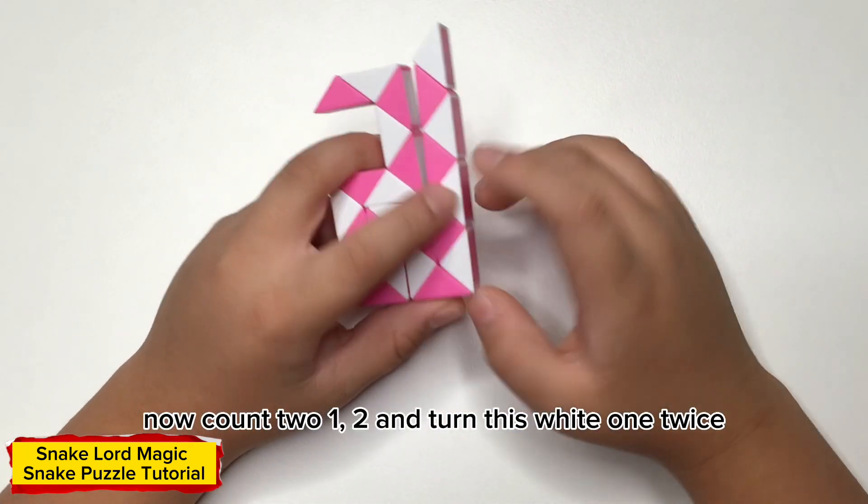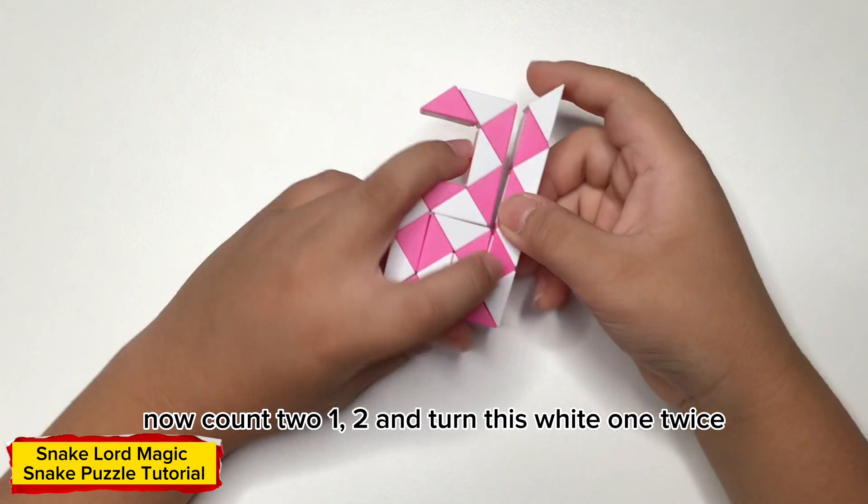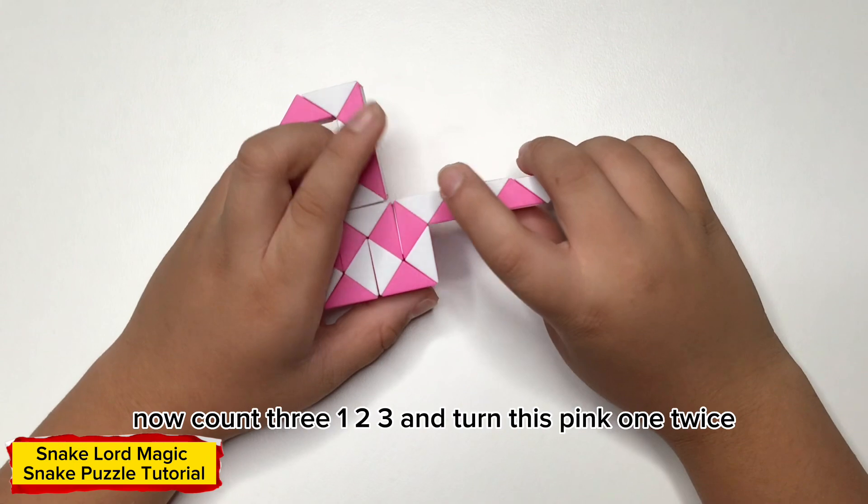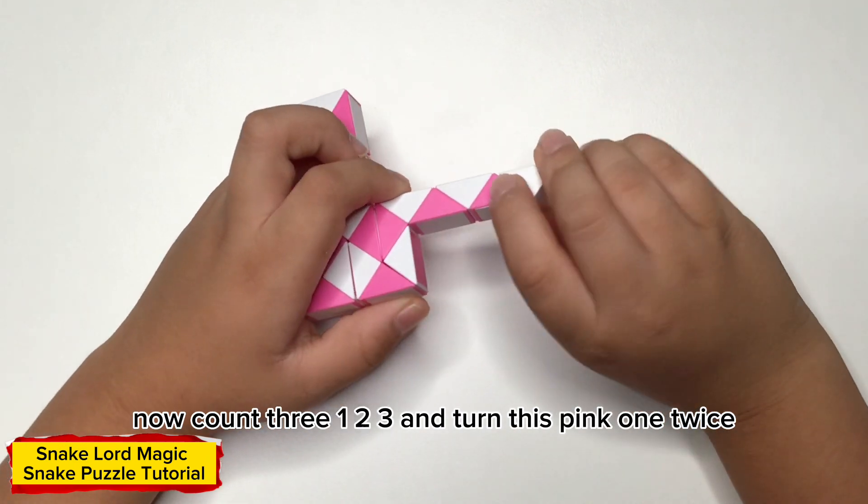Now count 2, 1, 2, and then twist piece 1 twice. Now count 3, 1, 2, 3, and then twist piece 1 twice.